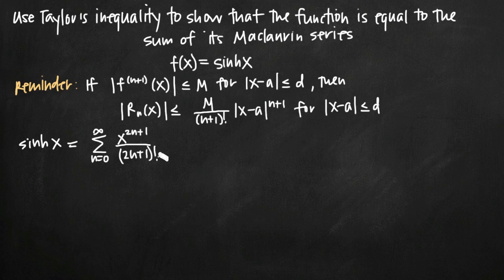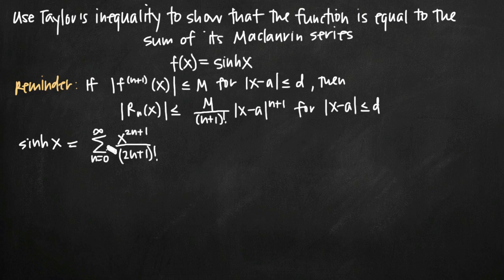What we're trying to show is that this infinite sum — the sum from n equals 0 to infinity of this Maclaurin series representation — is equal to hyperbolic sine of x. That these are actually equal to one another; we're trying to prove that this infinite sum is representative of hyperbolic sine of x for all values of x.